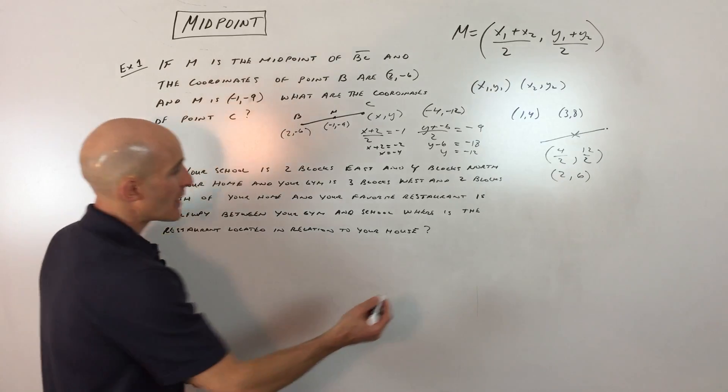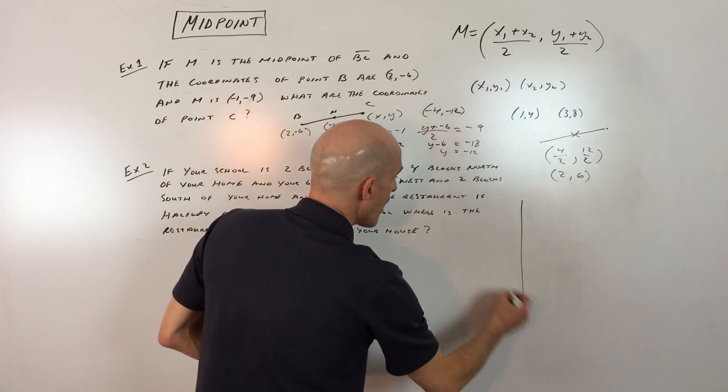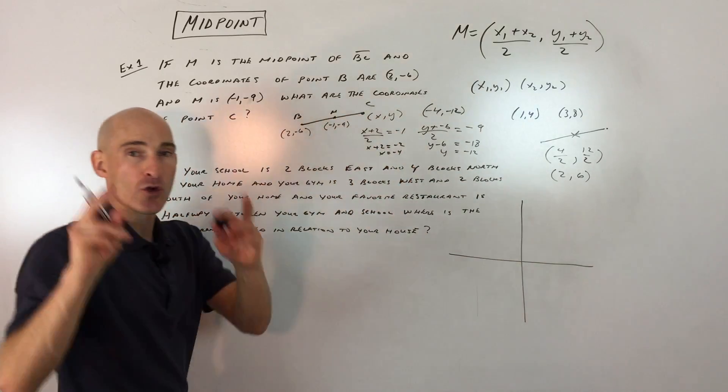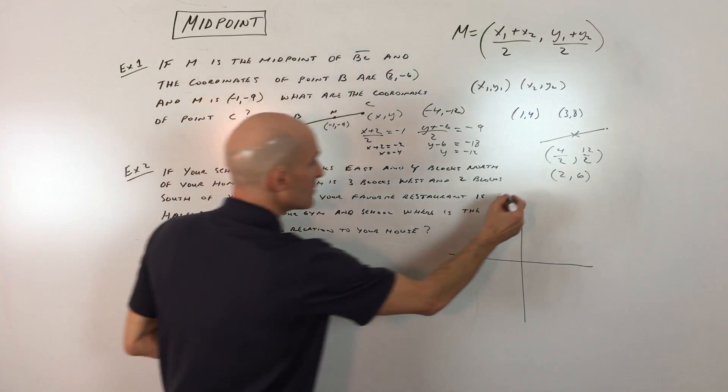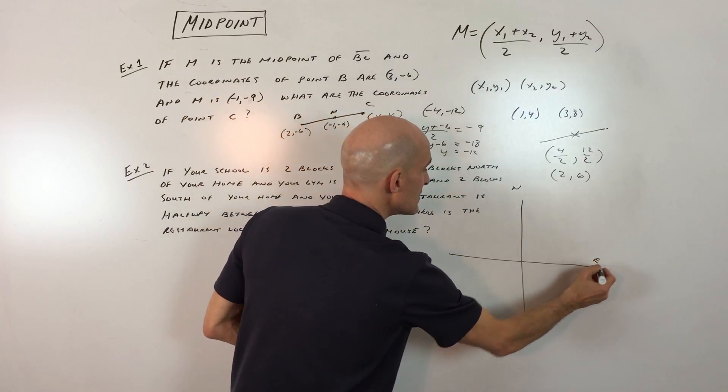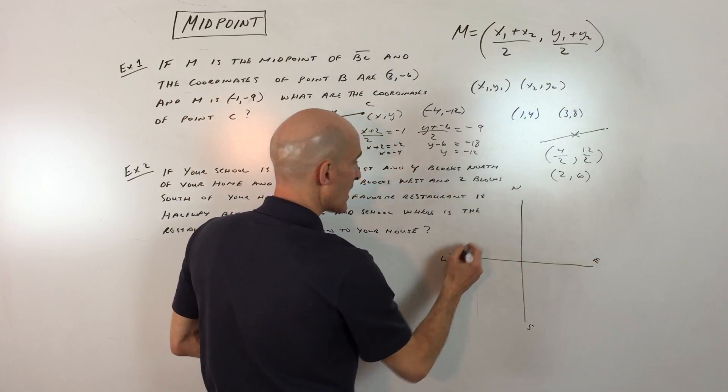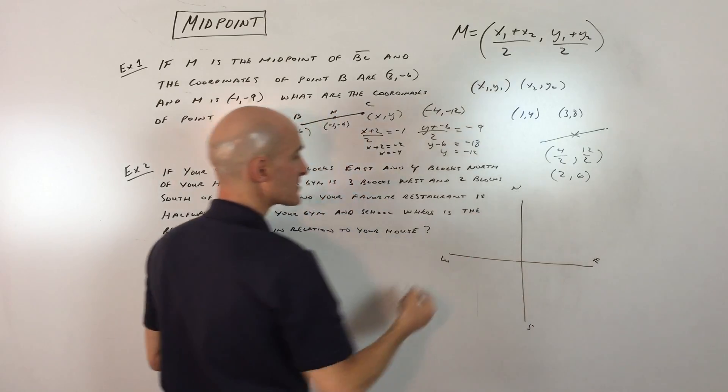The first thing that I would do here is draw a coordinate axis system. I would like to coordinate these locations, turn them into coordinates. You can draw this as north, east, south, west. So north, east, south, west, like so.